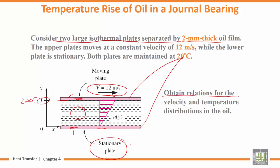We want to obtain a relation for the velocity and temperature distribution in the oil between the two plates. Is the velocity distribution linear, parabolic, or another form? We also want the temperature distribution between the two plates.